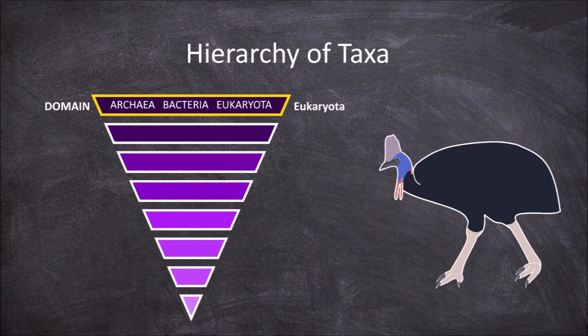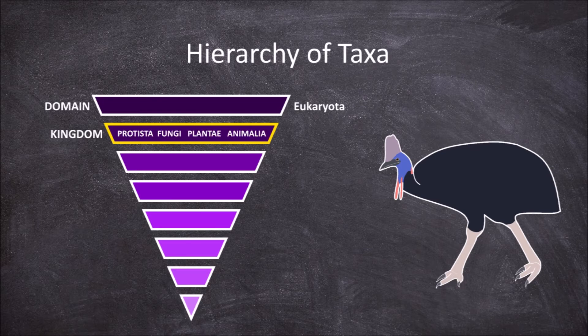The next hierarchical level of taxa down from this is the kingdom level. The domain eukaryota consists of four potential kingdom taxa: the protista, fungi, plantae, and animalia. The southern cassowary belongs to the kingdom animalia, along with all other organisms considered to be animals.